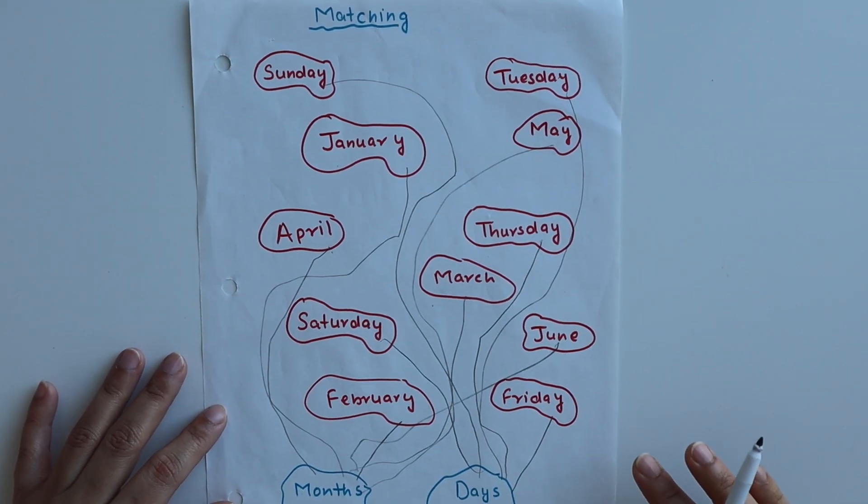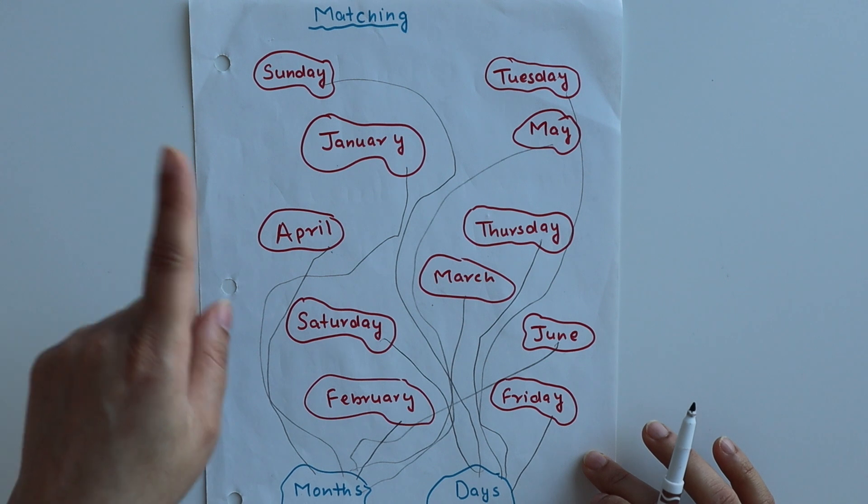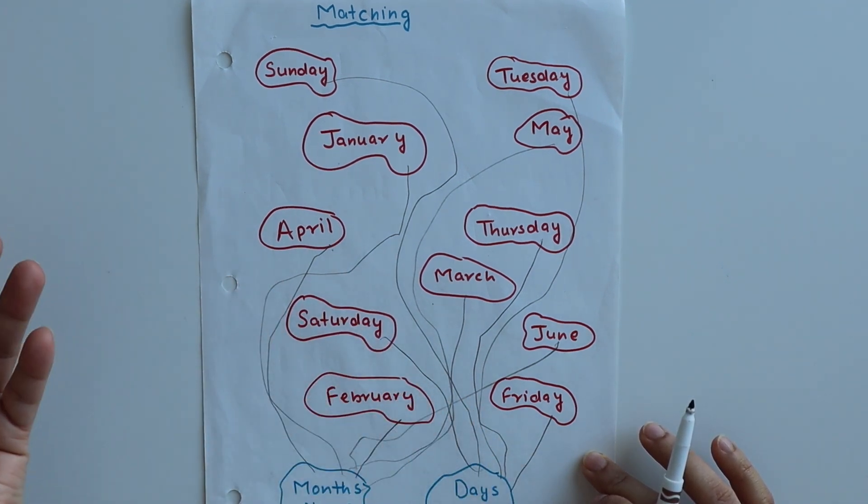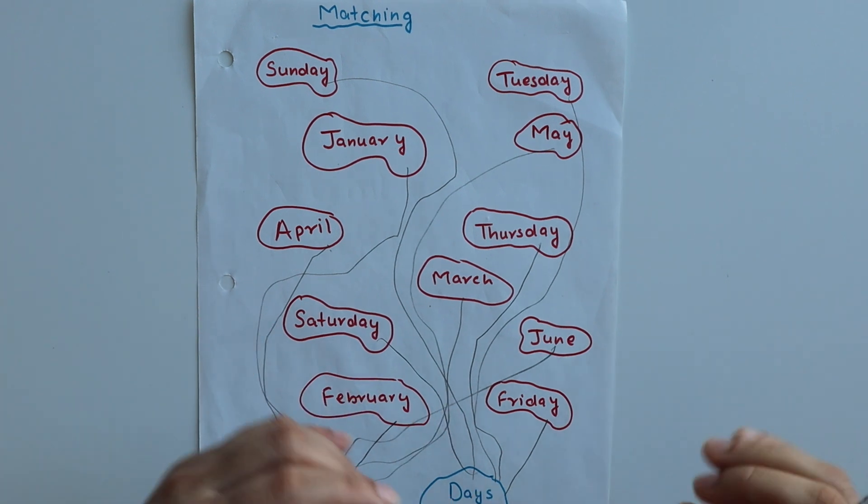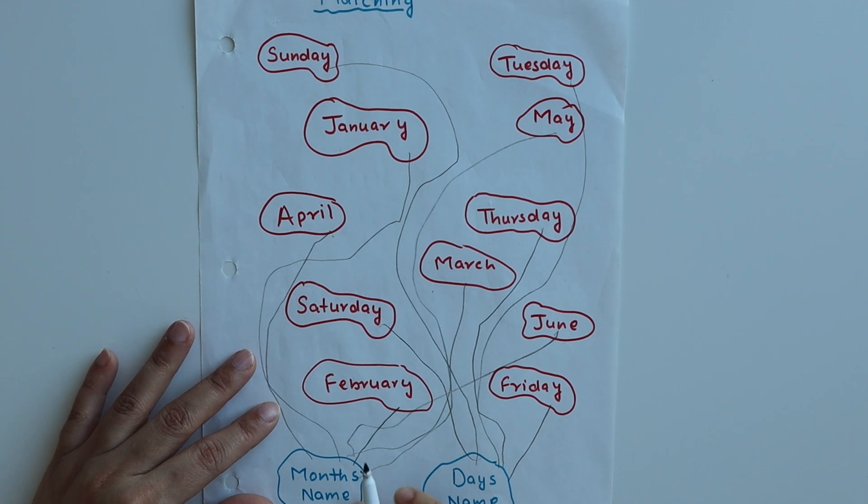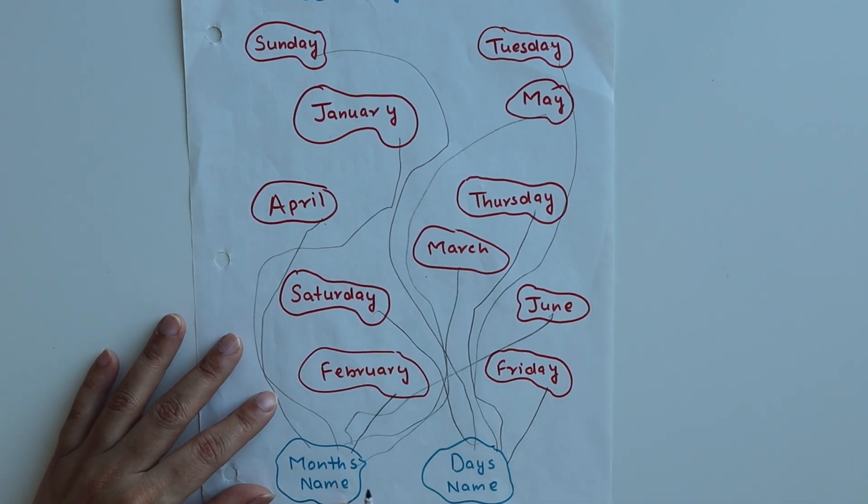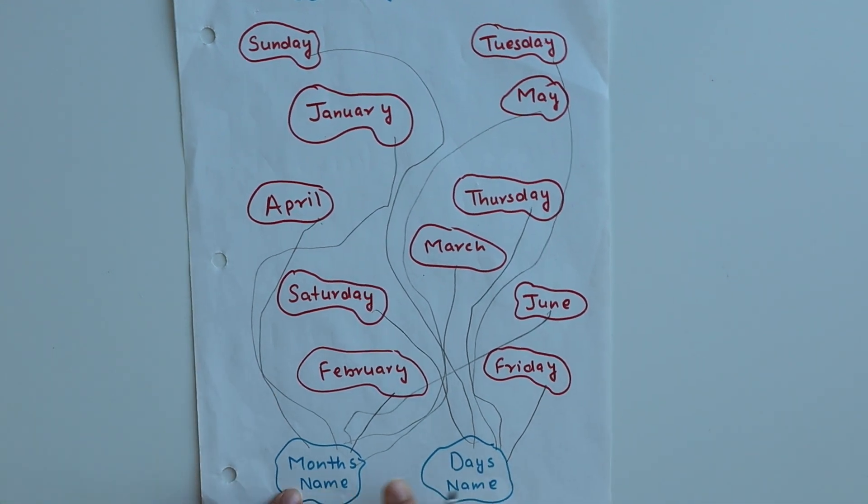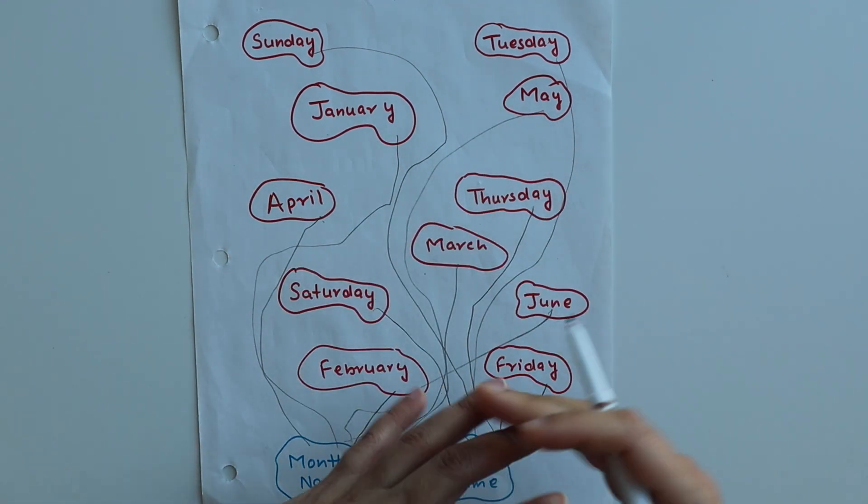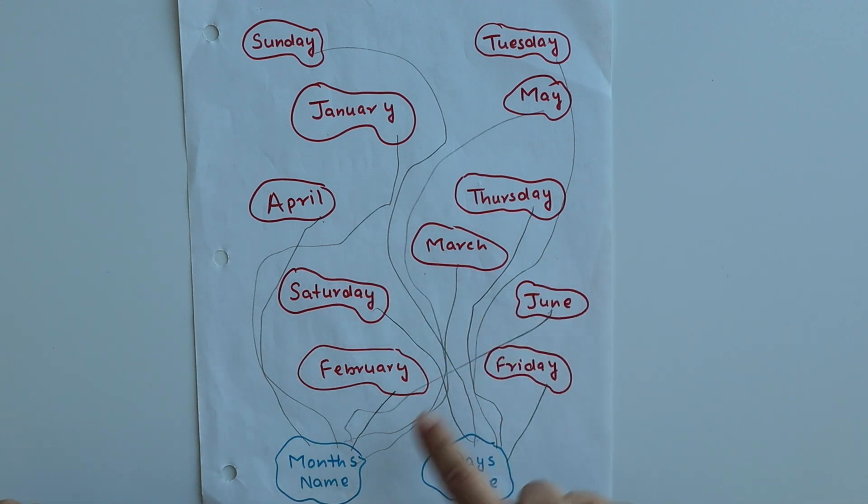Next we have matching. I'm using days' names and months' names, so I've given a simple worksheet so there's no confusion. I've made two categories: month name and days name, and I've written randomly some months and days. You have to match them with the right category.